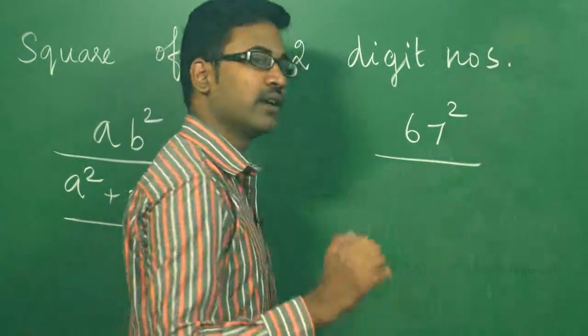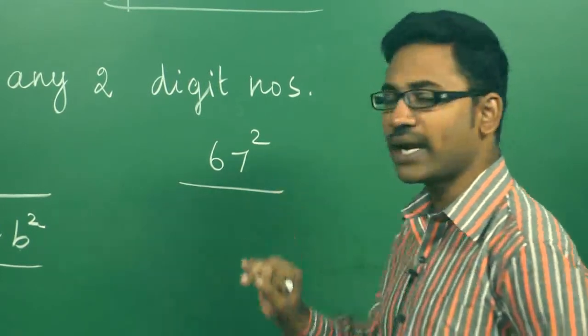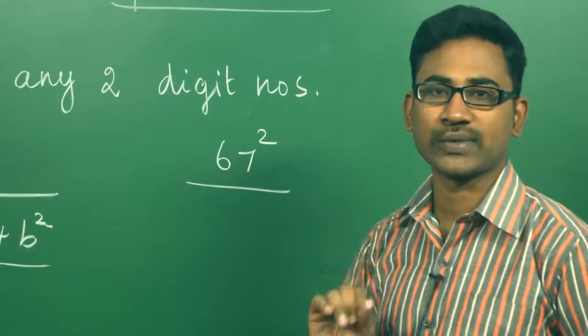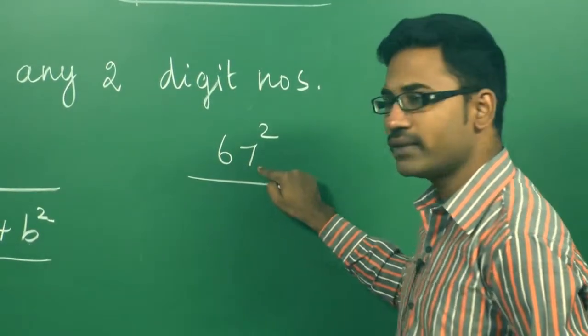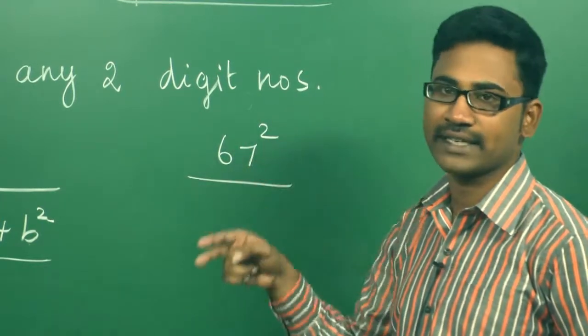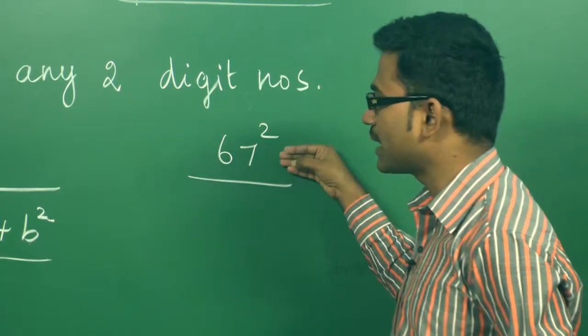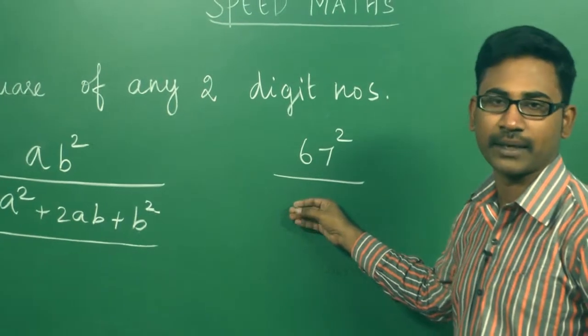We have seen three examples: square numbers ending with 5, square numbers close to 100, and square numbers close to 1000. This is not ending with 5. This is not even close to 100 because I told up to 75 we can take as close to 100. So this is totally different. We are using a method for any two-digit number. This method is applicable.